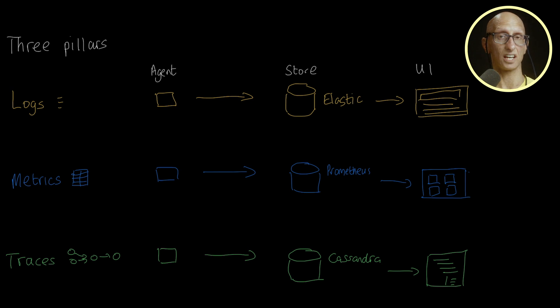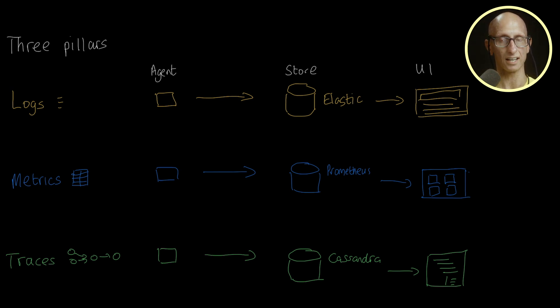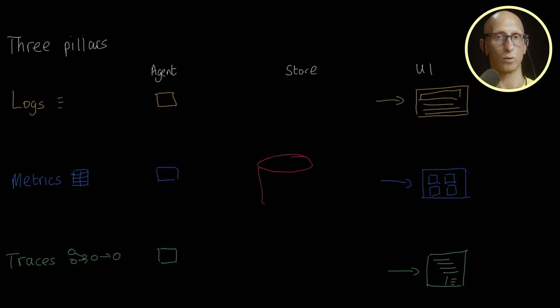Now if wide events are the answer, we can use a much simpler architecture. We can replace the individual stores with a column store, preferably one that supports semi-structured data. Let's remove those separate storage systems and replace them with just one. And we'll store our logs, metrics, and traces in there.